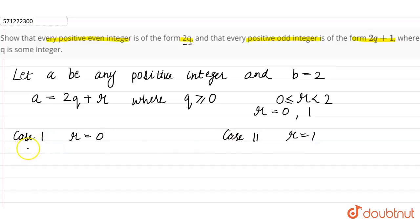We have to substitute the values for R. So A equals 2Q plus 0, which equals 2Q only. Now Case 2, where A equals 2Q plus 1.